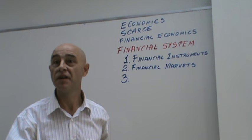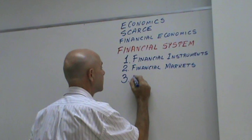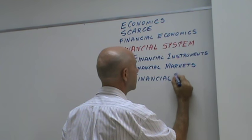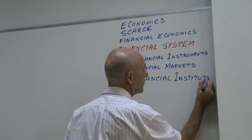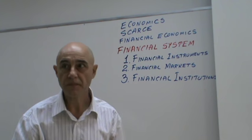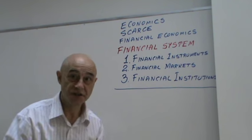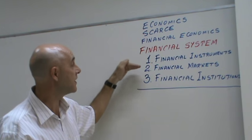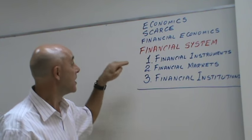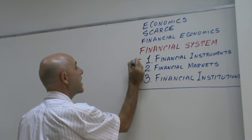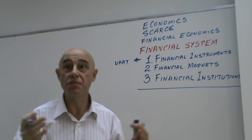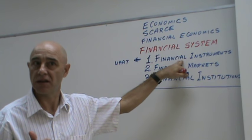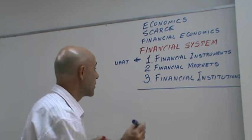Number two: financial markets. Number three: financial institutions. So the financial system comprises financial instruments, financial markets, and financial institutions. Financial instruments give you the answer of what people are doing — they buy and sell financial instruments. In finance, we call this trade.